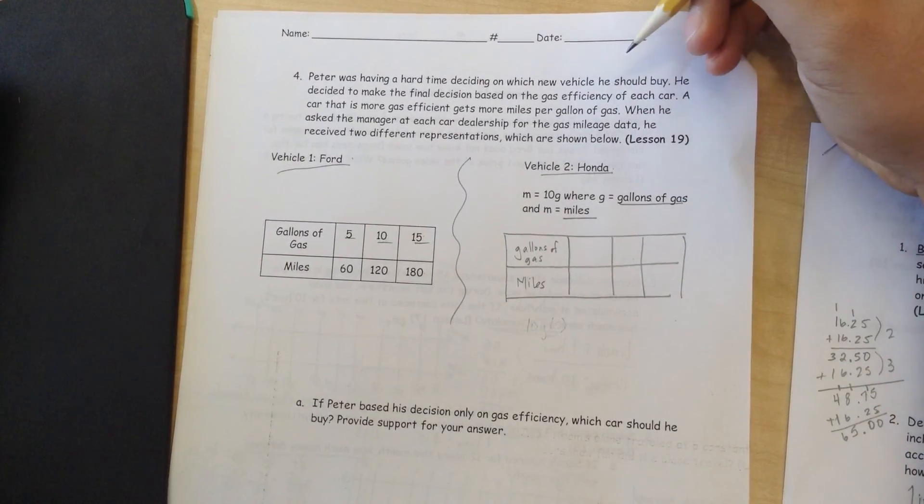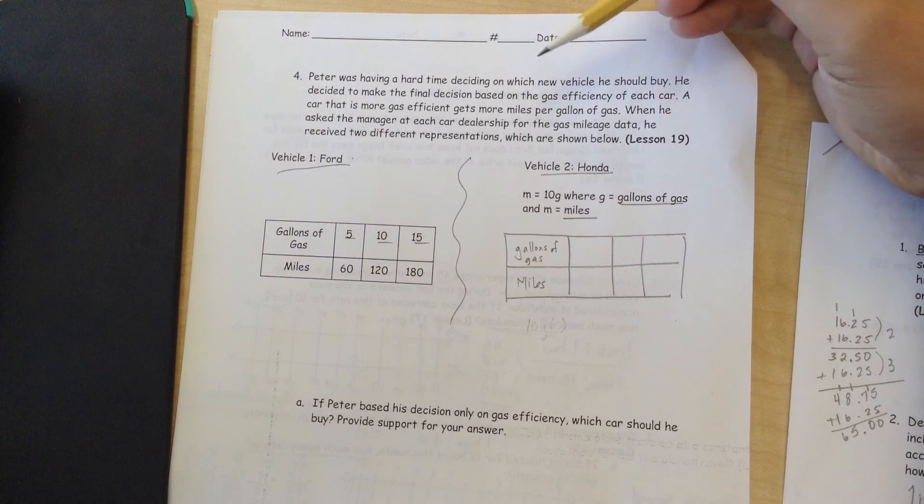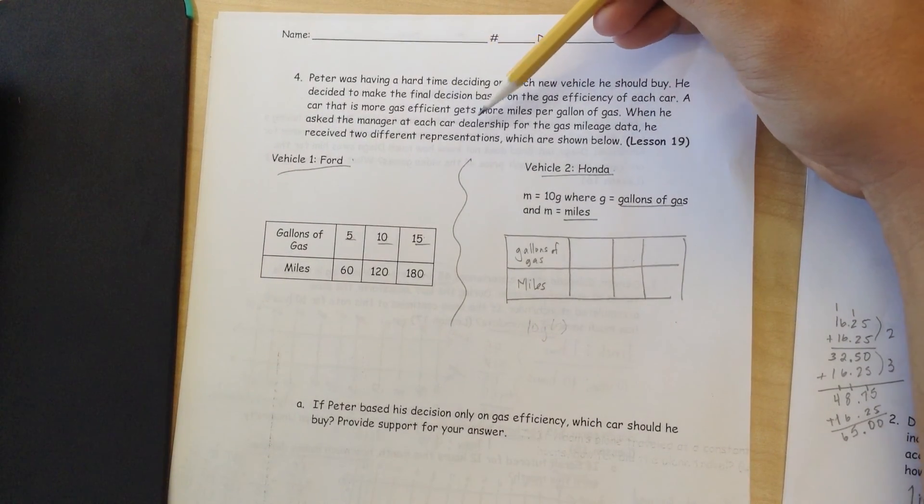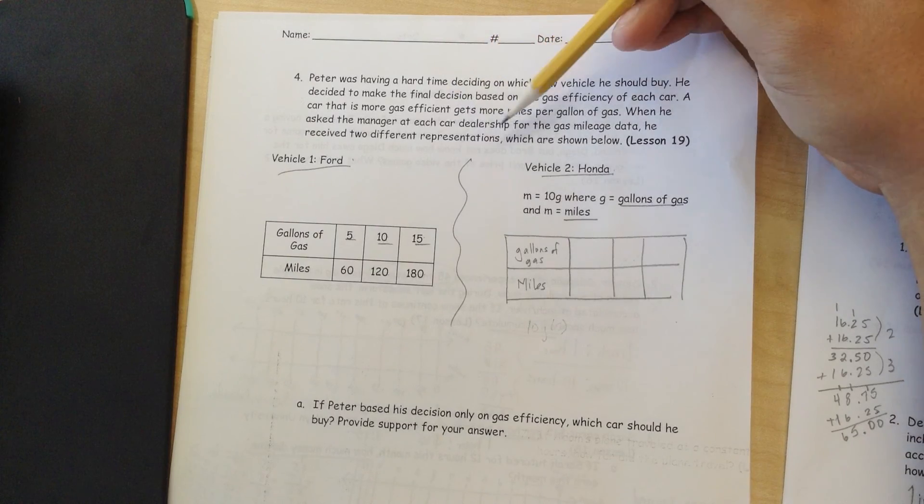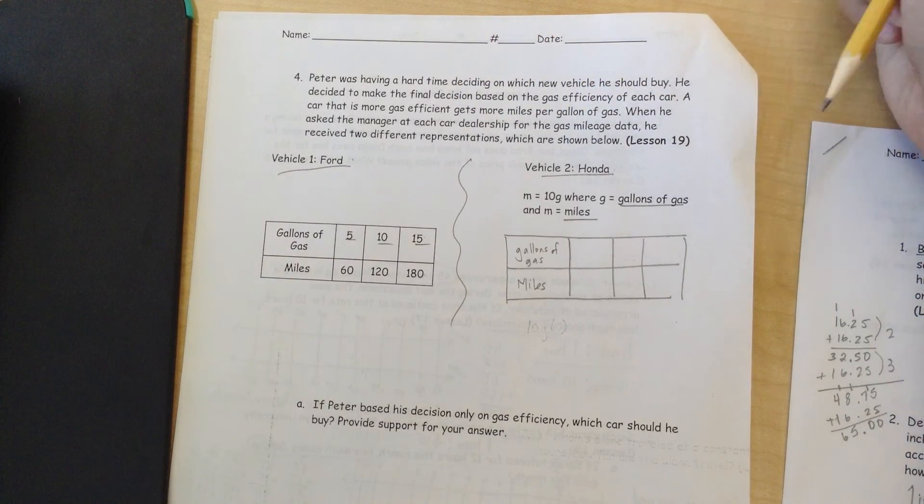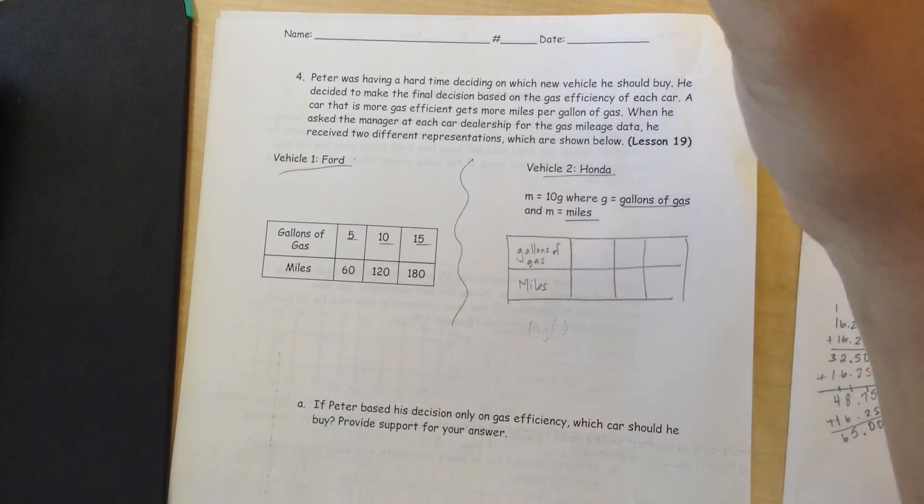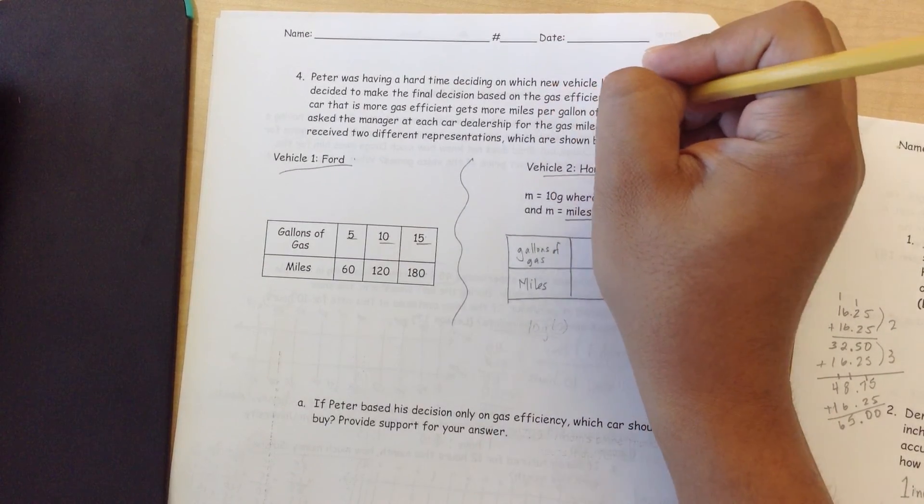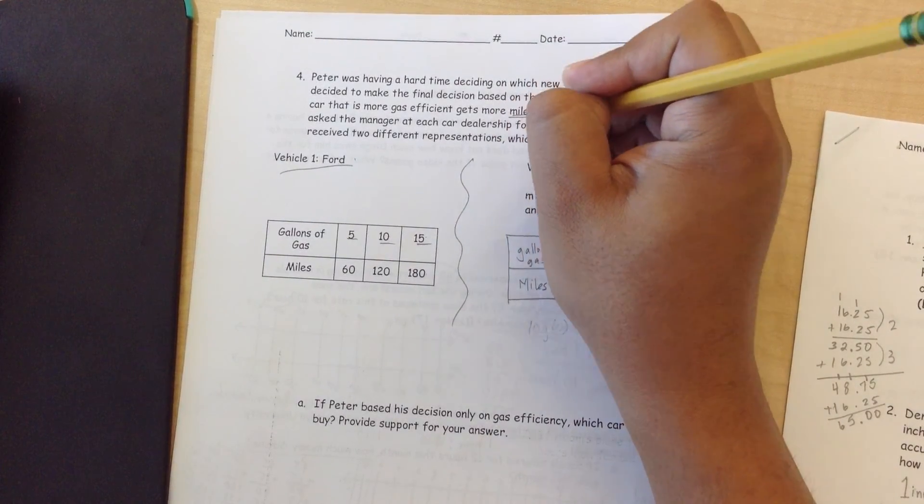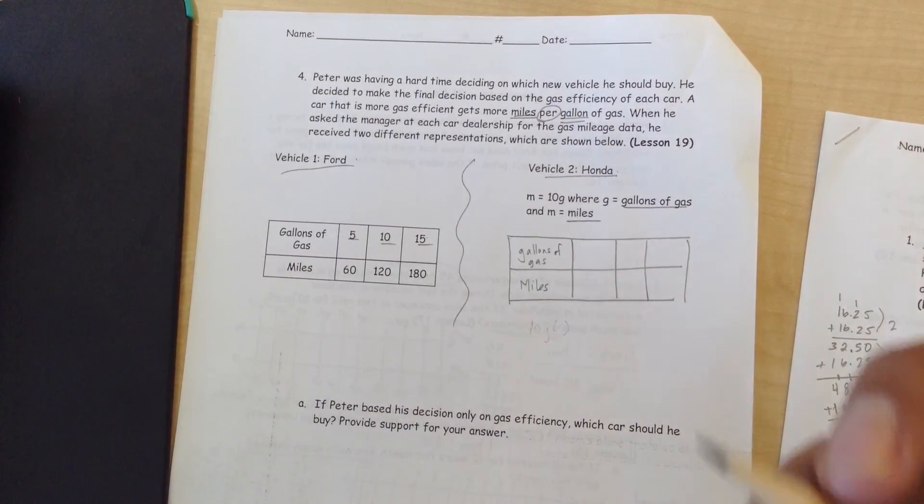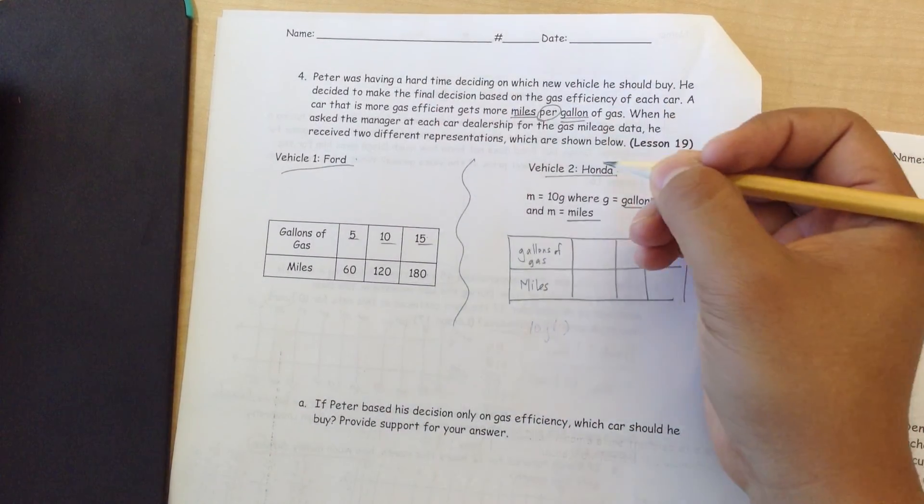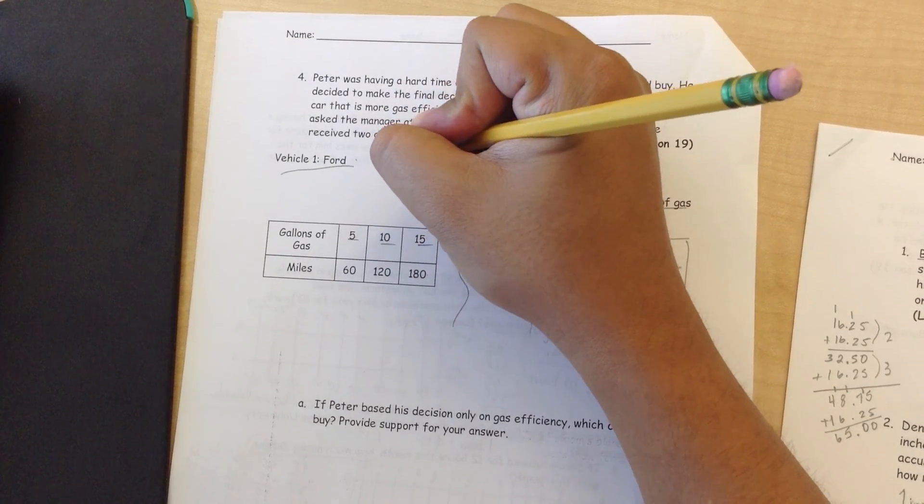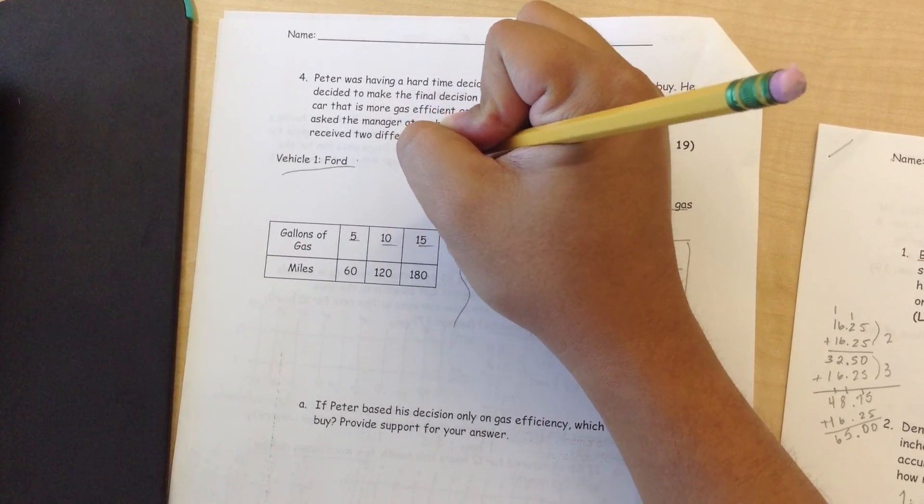Peter was having a hard time deciding on which new vehicle he should buy. He decided to make the final decision based on the gas efficiency of each car. A car that is more gas efficient gets more miles per gallon of gas. When he asked the manager at each car dealership for the gas mileage data, he received two different representations which are shown below. The key phrase we need to look at is a car that is more gas efficient gets more miles per gallon. That's miles per gallon. That's the part we're focusing on. If you had to look at a ratio and write it down, it would definitely be miles per gallon.